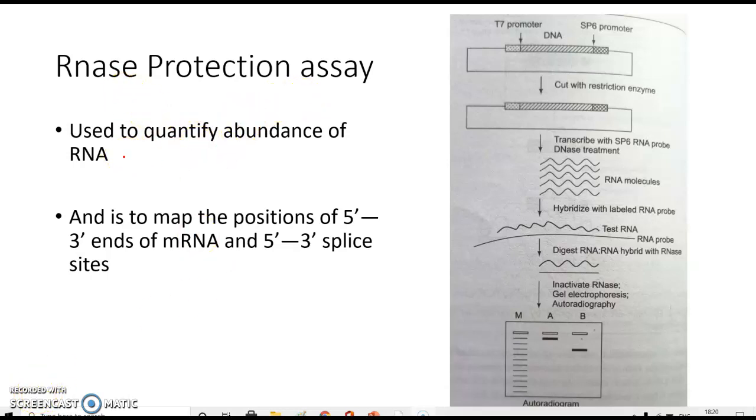So it is a simple technique and this RNase protection assay is a technique which is used to quantify the abundance of RNA. And it has one more advantage, that is it is also used to map the position of 5' to 3' ends of mRNA as well as 5' to 3' splice sites present in RNA.